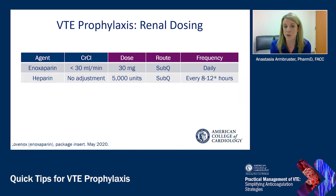For enoxaparin and heparin: enoxaparin at a creatinine clearance less than 30 should be reduced to 30 milligrams daily. Heparin is a great option for those patients who have limited renal function or are on dialysis, as there are no recommendations for dose adjustment in patients with renal dysfunction.